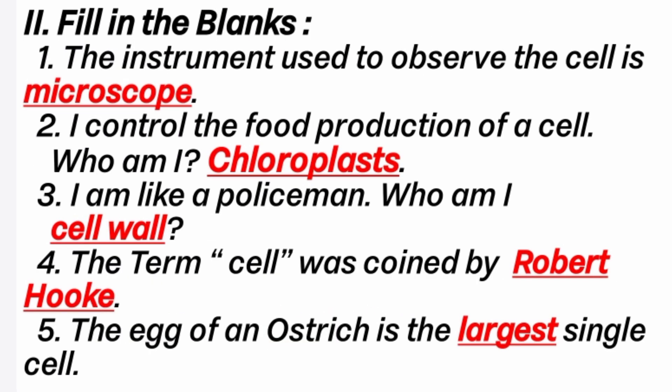Second, fill in the blanks. First question: the instrument used to observe the cell is dash. Answer is microscope. We can see the micro-organism with the help of a microscope. Second question: I control the food production of a cell. Who am I? Answer is chloroplast.